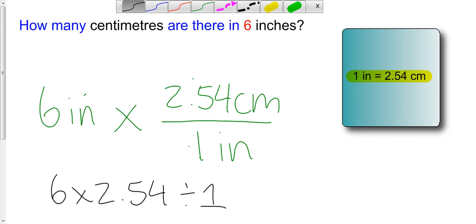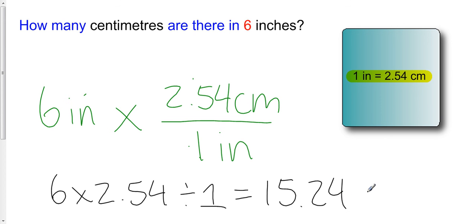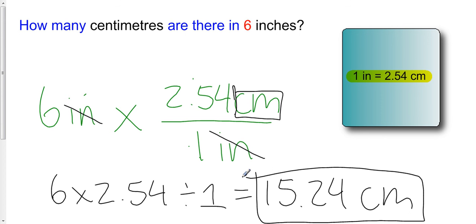15.24. And this is going to be centimeters. That's because the inches here are cancelled out, and all I'm left with are the centimeters. So what I've just done, I've converted 6 inches to 15.24 centimeters. So how many centimeters are there in 6 inches?